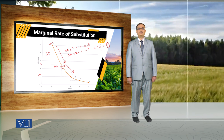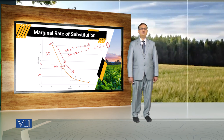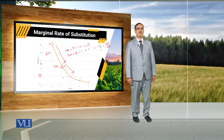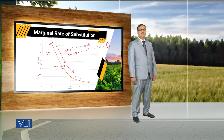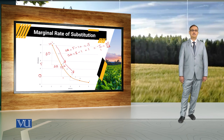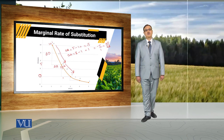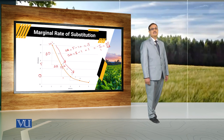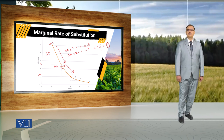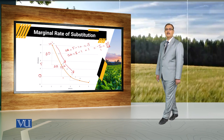The slope of the indifference curve changes as we move along it. As we move down along an indifference curve, the slope increases in magnitude if we do not ignore the negative sign. The marginal rate of substitution is the rate at which the consumer is willing to substitute one commodity with another while keeping satisfaction unchanged. The marginal rate of substitution of apples for oranges equals the negative of the slope of the indifference curve, or equivalently, the marginal utility of apples over the marginal utility of oranges. It indicates the units of oranges a consumer is willing to forego to get an additional unit of apples.